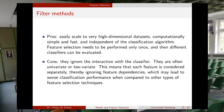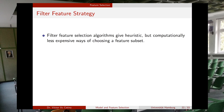Wrapper methods can create combinations of features during model training, whereas filter methods evaluate each feature separately. Sometimes combining two features creates something that gives more information or makes it easier for the model to find the best parameters — but this cannot be detected with filter methods. Filter feature selection algorithms give heuristic but computationally less expensive ways of choosing a feature subset.